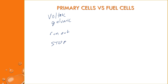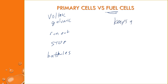A good example of voltaic cells are normal batteries like alkaline batteries or lithium-ion batteries — eventually they're going to run out and stop producing electrical energy. Fuel cells, on the other hand, will produce energy as long as you provide fuel; they keep going as long as fuel is provided.